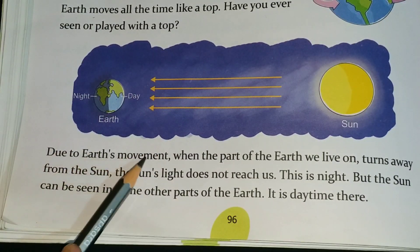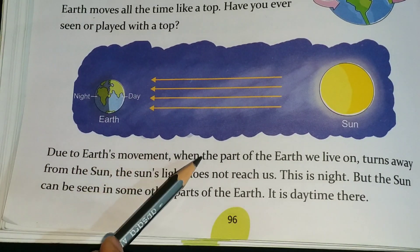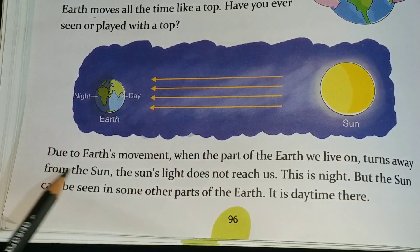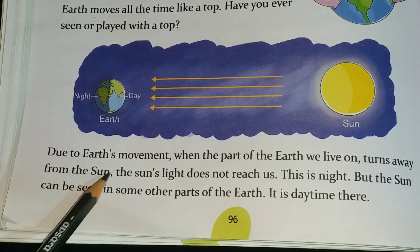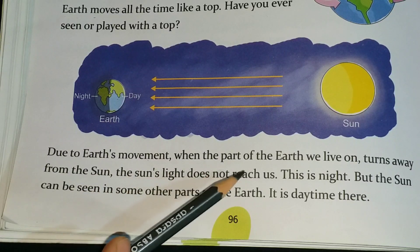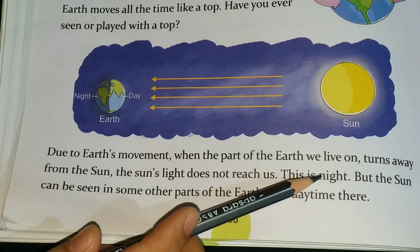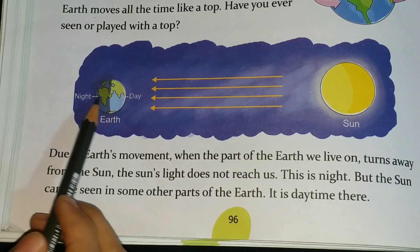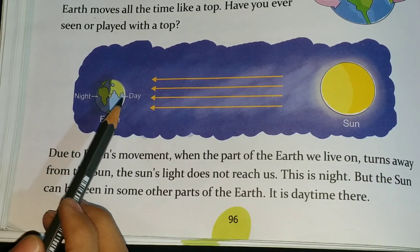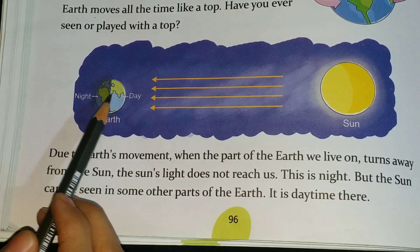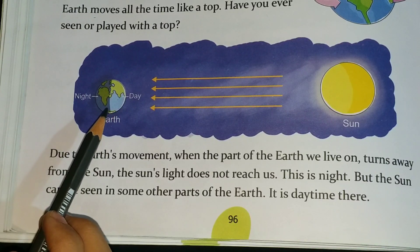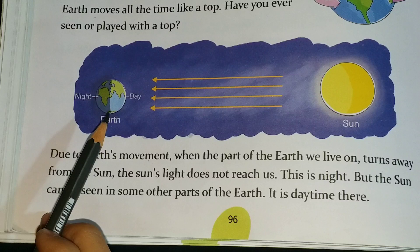Due to Earth's movement, when the part of the Earth we live on turns away from the sun, the sun's light does not reach us. This is night. Earth keeps rotating all the time, but we cannot feel that movement or rotation.